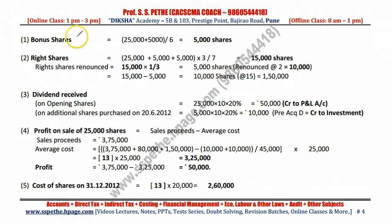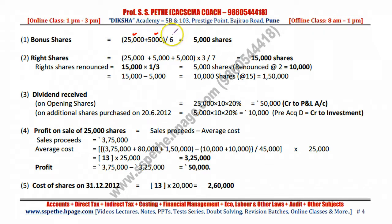Let's calculate the bonus shares: the ratio is 1 each to 6. First, how many shares do you have? 25,000 opening plus 5,000 additional gives a total of 30,000 shares. For every 6 shares you get 1 bonus share, so from 30,000 shares you will get 5,000 bonus shares.